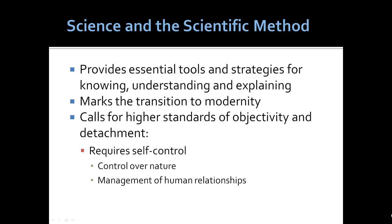Science and the scientific method more generally provides essential tools and strategies for knowing, understanding, and explaining the natural world. Science marks the transition to modernity. In earlier societies, people were not always able even to distinguish between the living and non-living object or things. This resulted in a kind of magical, mythical thinking in which the raging sea might be appeased by gifts or offering.